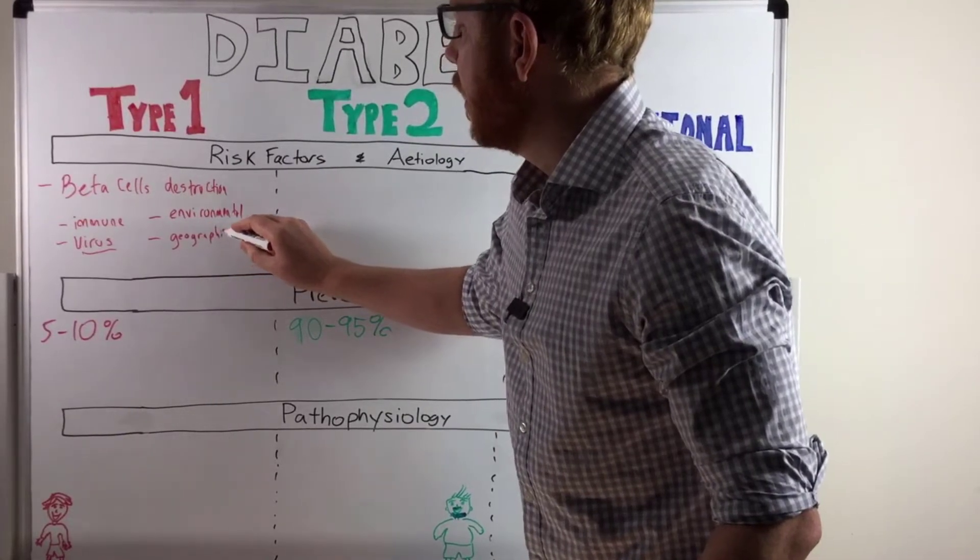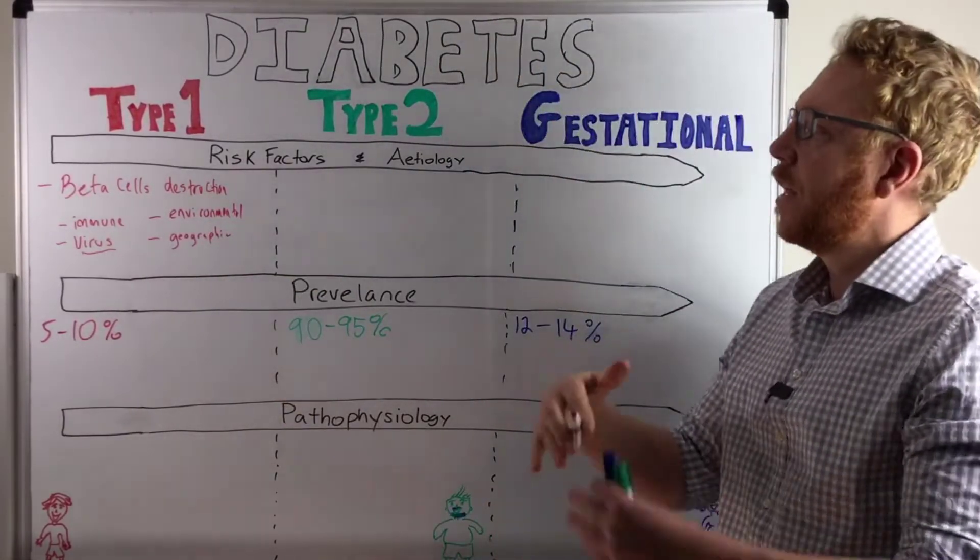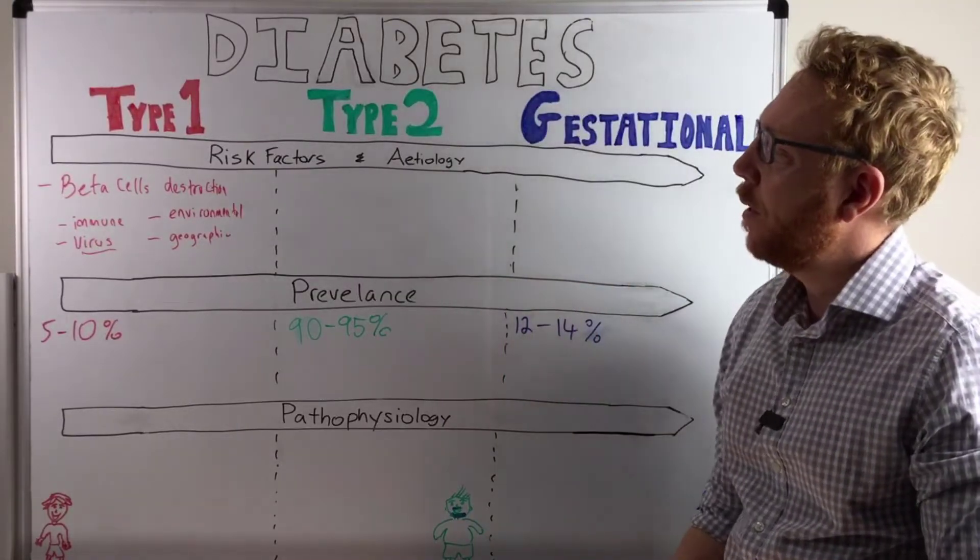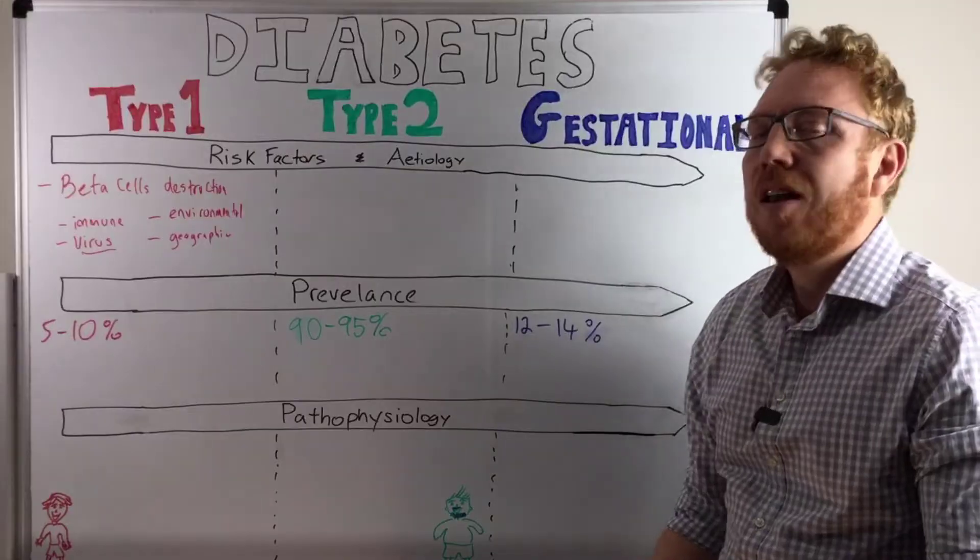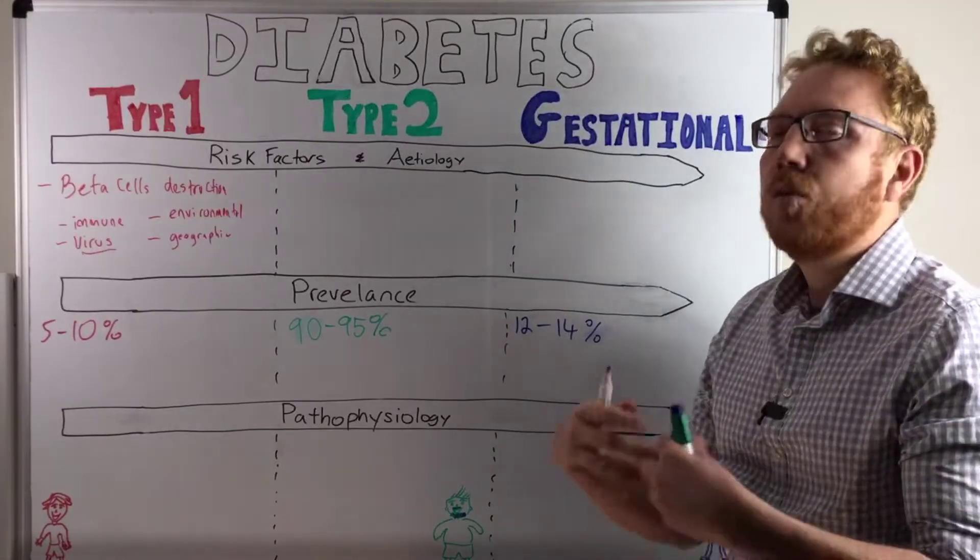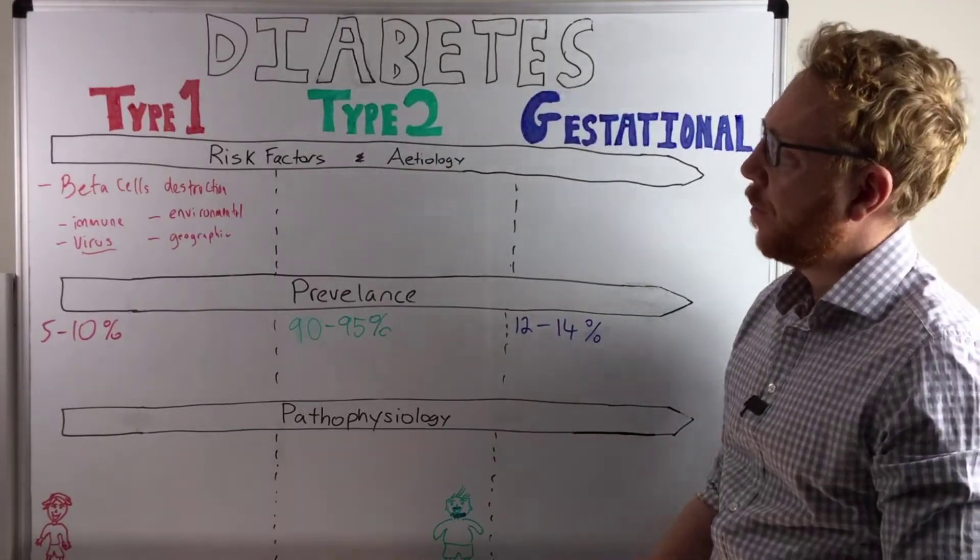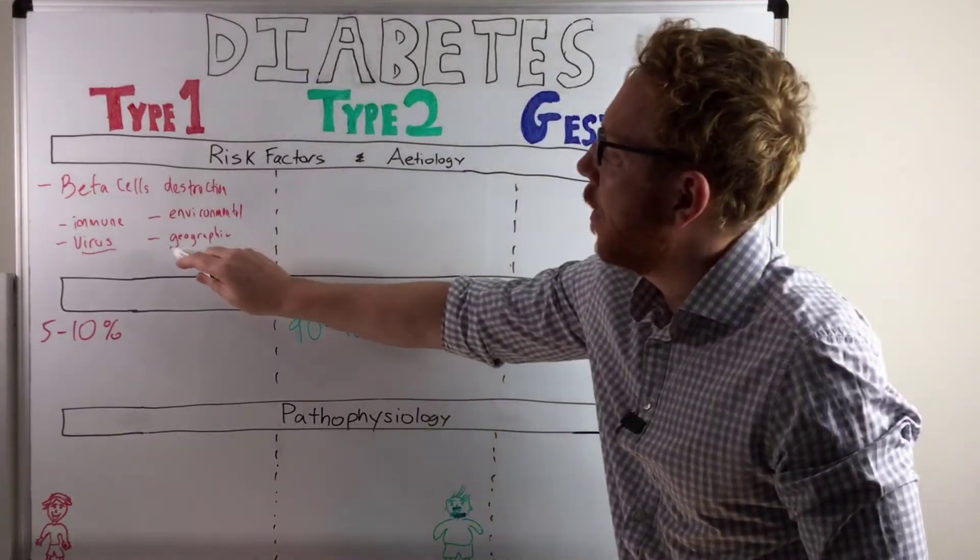What I mean by that is there's certain countries in the world that seem to have a higher amount of type 1 diabetes, specifically those at higher latitudes like Sweden, like Finland, Canada, and so forth.